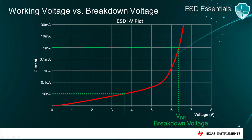At TI, we spec a VRWM, or working voltage, at max 10 nanoamps. This working voltage value can be interpreted as the maximum voltage recommended without excessive leakage. As a result, the interface signal voltage should not exceed VRWM. For example, if your operating signal has a voltage range of 0 volts to 3.6 volts, you should select an ESD diode that has a working voltage of 3.6 volts or slightly higher — anything less, and the diode will leak current during normal operation. By having this margin between working voltage and breakdown voltage, we account for variations across temperature and process.